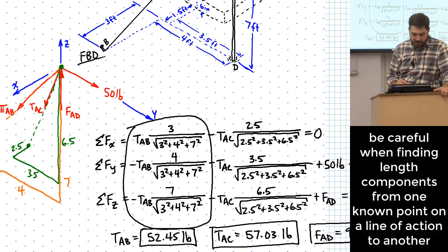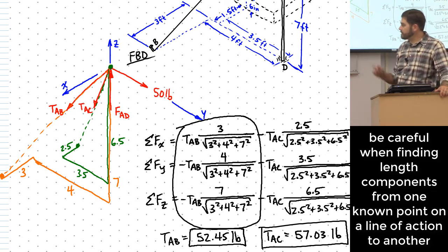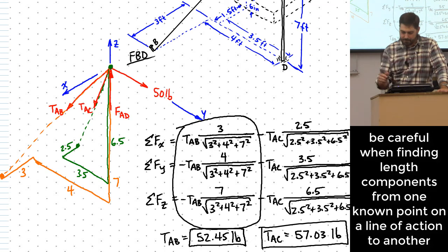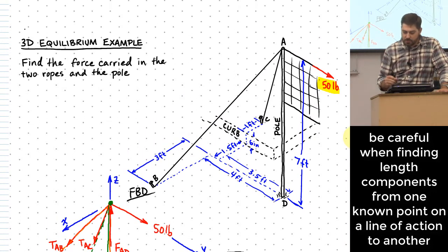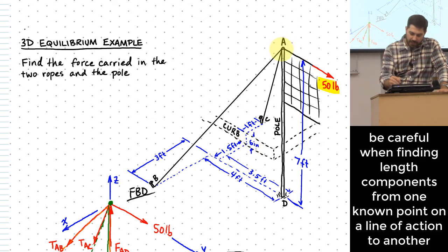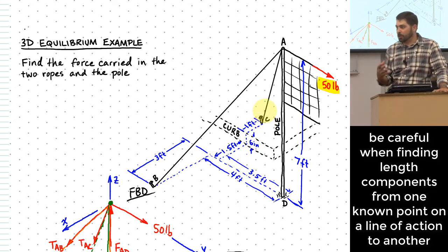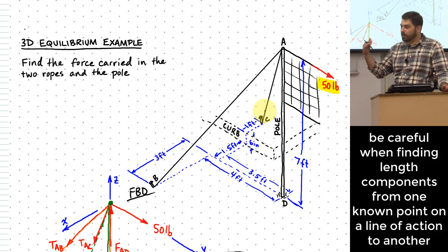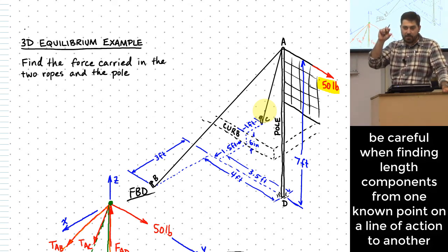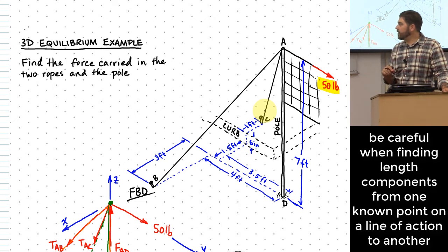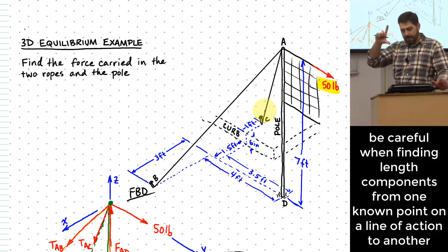Let me spend a couple of seconds reviewing two tips. Tip number one: be very careful when accounting for things like the height deduction — where we subtracted six inches to get the actual vertical length from A to C. A lot of people make errors there, forgetting to subtract or counting something in the wrong direction.